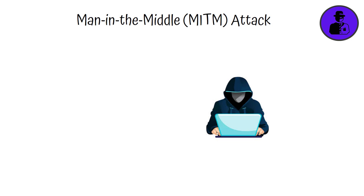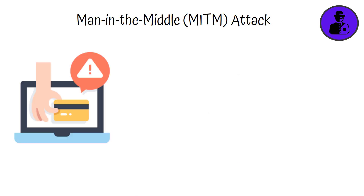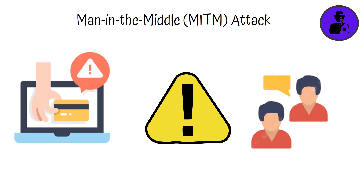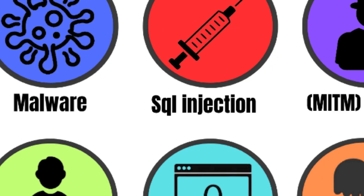In a Man-in-the-Middle (MITM) attack, the hacker secretly intercepts communication between two parties, such as a user and a website. The hacker can then steal data or inject malicious content into the communication. This often happens over unsecured Wi-Fi networks, where hackers can eavesdrop on users' activities.